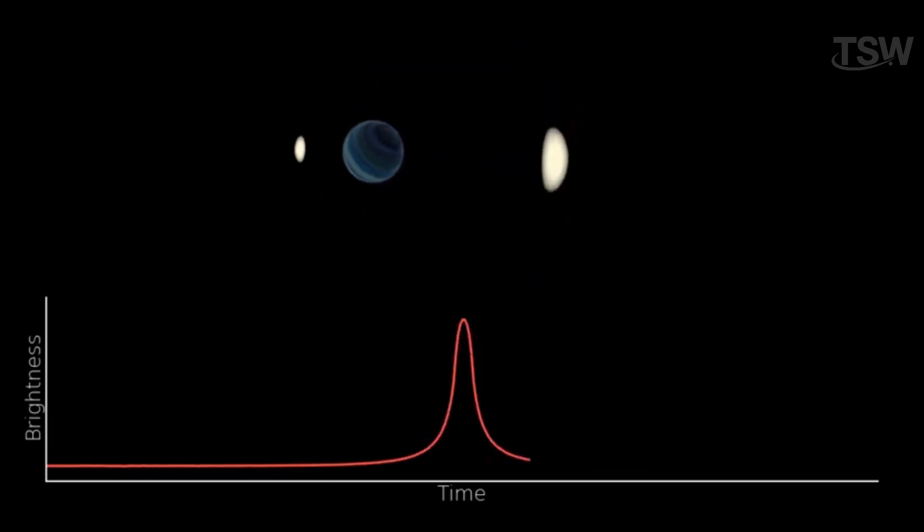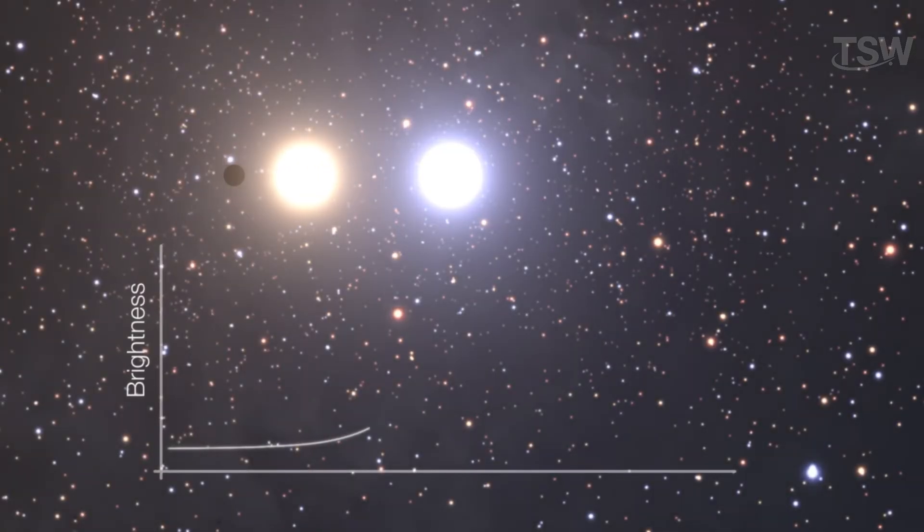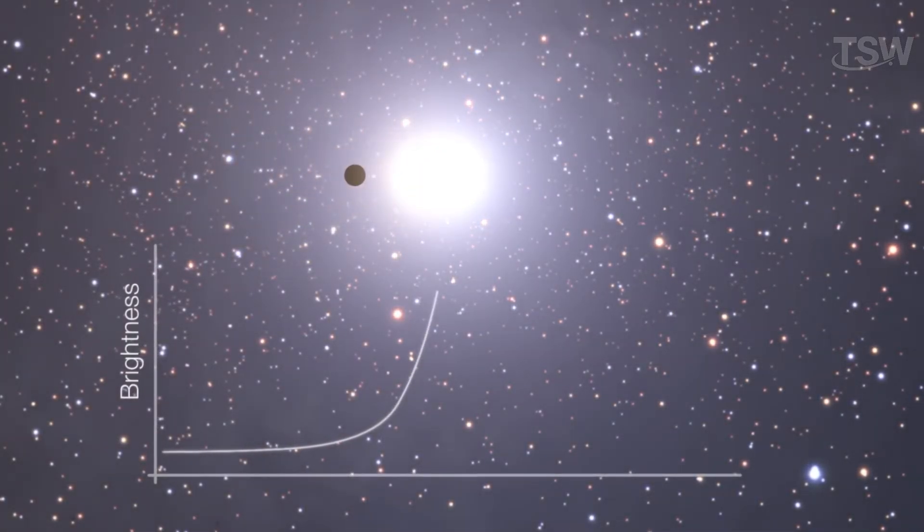Here's how it works. When a star passes directly between us and a more distant star, its gravity can act like a lens, briefly increasing the brightness of the background star.